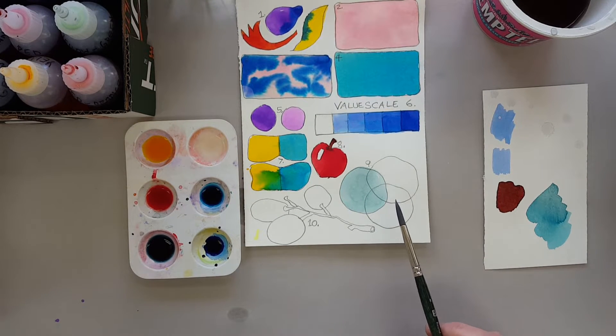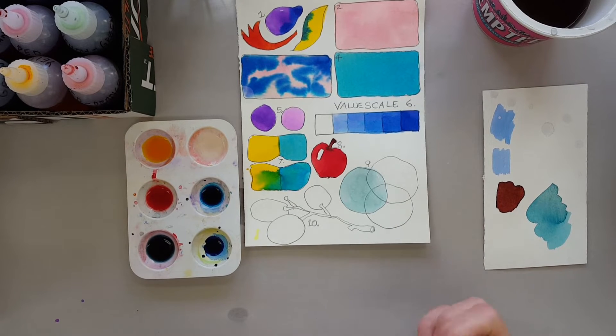All right, now I'm going to show you number nine, which is the Venn diagram of glazing. Glazing is when you layer transparent layers of color one over another.